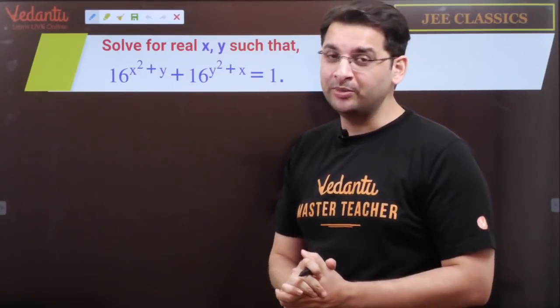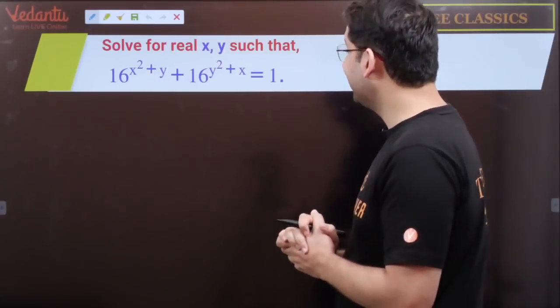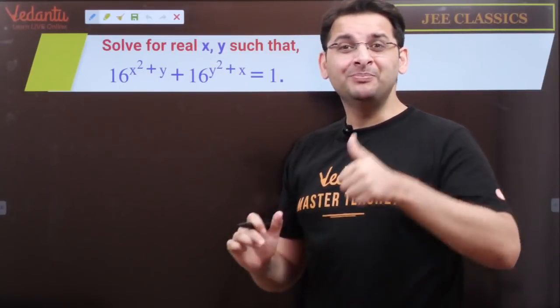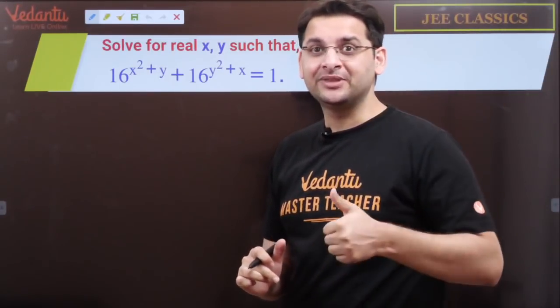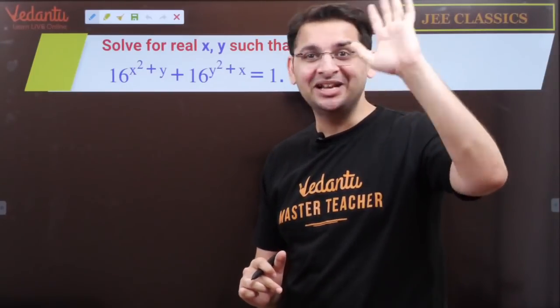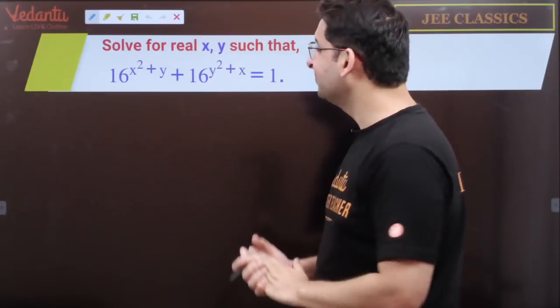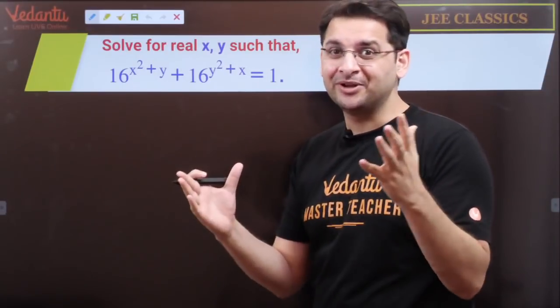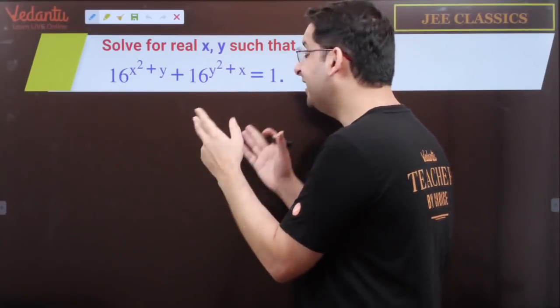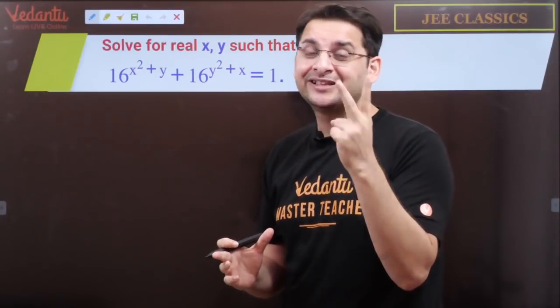This is one of the very classic JEE related problems. Now guys, one basic thumb rule in mathematics is that to solve for variables, you need that many equations. But this doesn't follow that rule because here only one equation is given but the variables are 2, x and y.